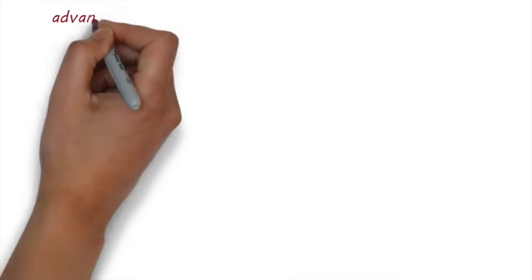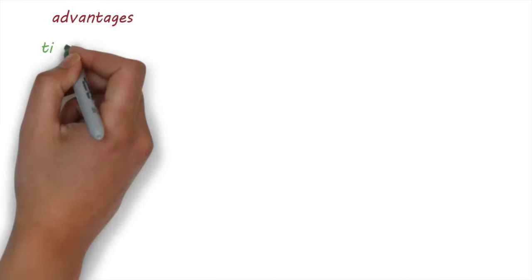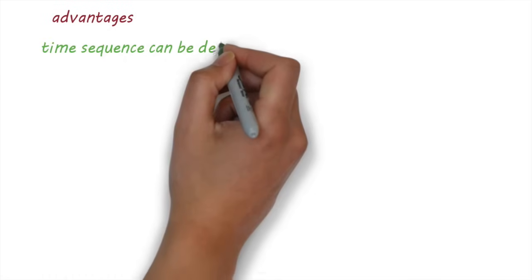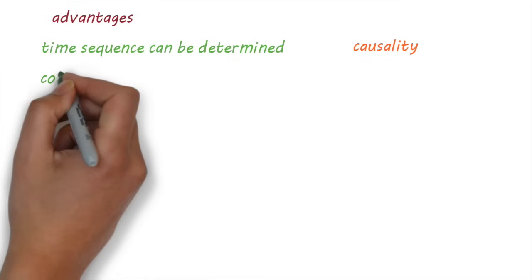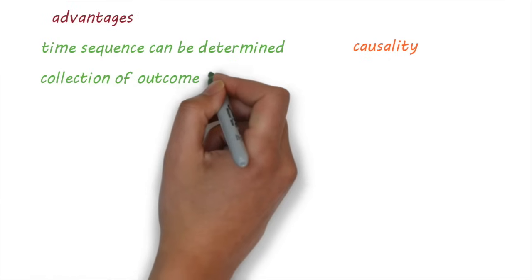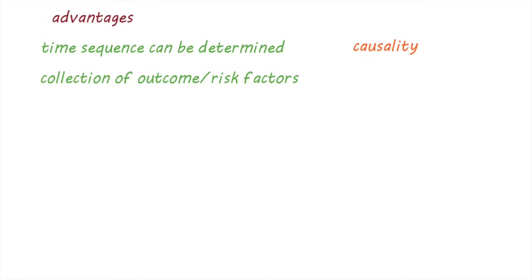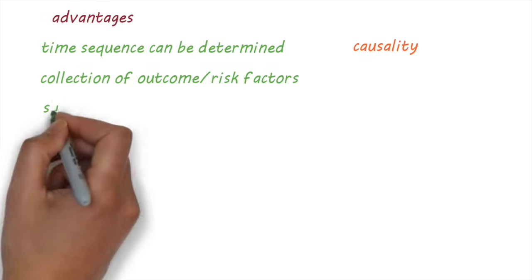One of the main advantages of cohort studies is that the time sequence of events can be determined. This is useful when trying to determine what caused a disease. Another advantage is that information about several different outcomes and risk factors can be collected at the same time. This allows for sub-analysis to be conducted on the data.